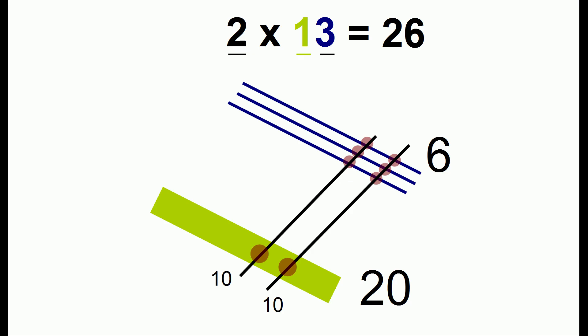So we can do 2 times 13, instead of having 13 different lines, we can have one line for the 1, a big line, representing 10 of the lines, and we'll have 3 of the regular lines.